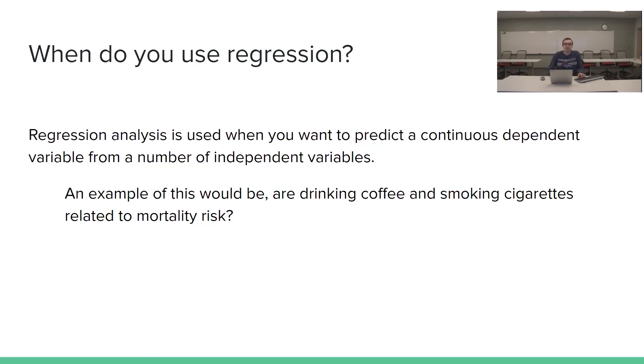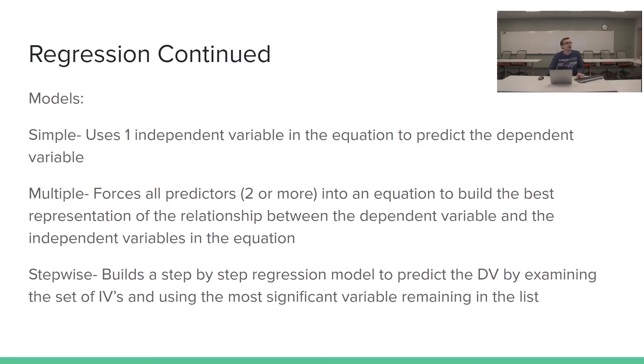So next we're going to look at when you use regression. Regression analysis is used when you want to predict a continuous dependent variable from a number of independent variables. A very good example of this would be, are drinking coffee and smoking cigarettes related to mortality risk? So our independent variables in this would be drinking coffee and smoking cigarettes. You would use those to predict your dependent variable, which is mortality risk. So you're looking at those two variables to determine what this end outcome results in. I'm not going to go into each kind of possible regression that you can run, but I'm just going to briefly describe the three main ideologies that these regressions fit into.